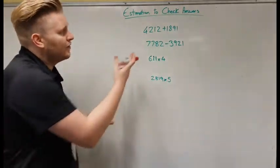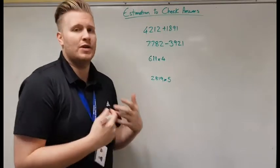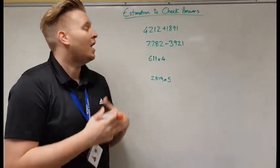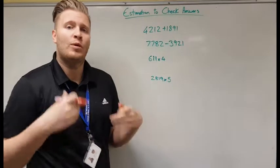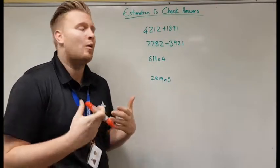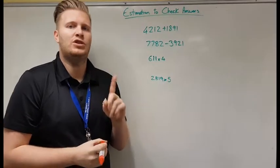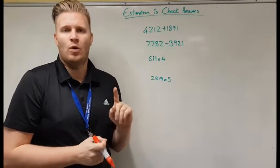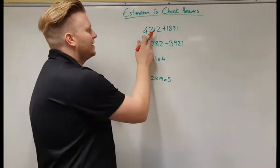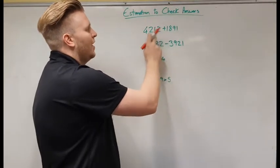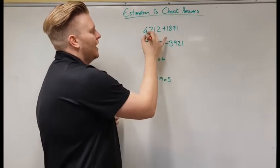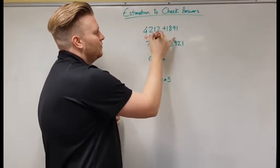But see we've got this sum here, 4,212 plus 1,891. Yes, we do column addition to find out our answer. But what we want to do to check the answer quickly is change these numbers so they've only got one digit that isn't zero. So what I mean is this 4,212. I'm going to round this to 1,000. I'm going to say 4,000 and 5,000.